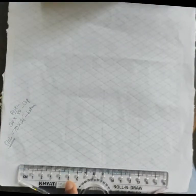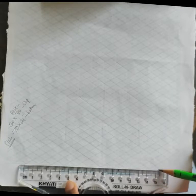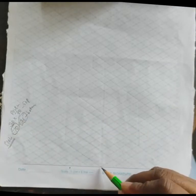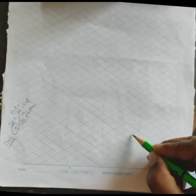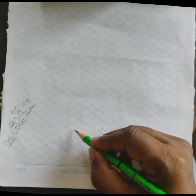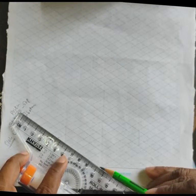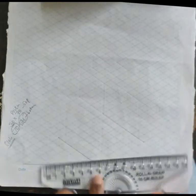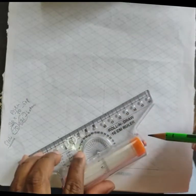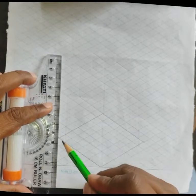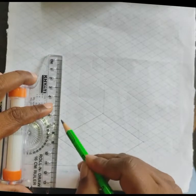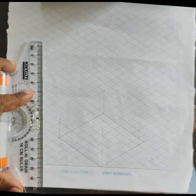First, we draw the bottom solid which is a square slab. We take a horizontal line and a reference point. We need a 70mm square with a thickness of 25mm - so we count seven boxes for each side. For the 25mm thickness, that is two boxes and half, which corresponds to the midpoint of the rhombus-like structure.